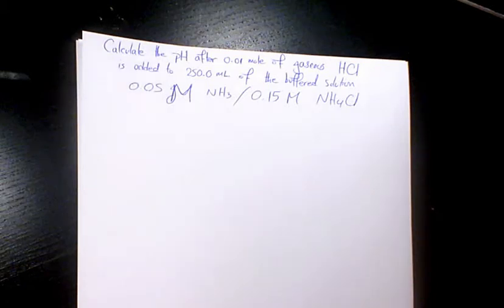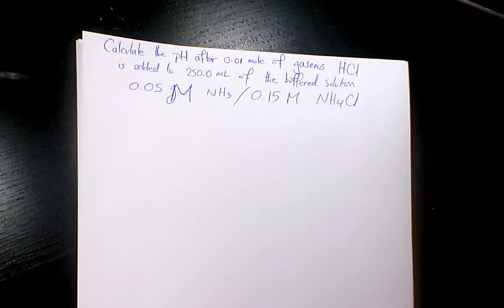What's up guys, this is Massey. Welcome to another video. In this video I want to show you how to calculate the pH after we add 0.01 mol of gaseous HCl to 250 milliliters of the buffered solution of 0.05 molar ammonia and 0.15 molar ammonium chloride.